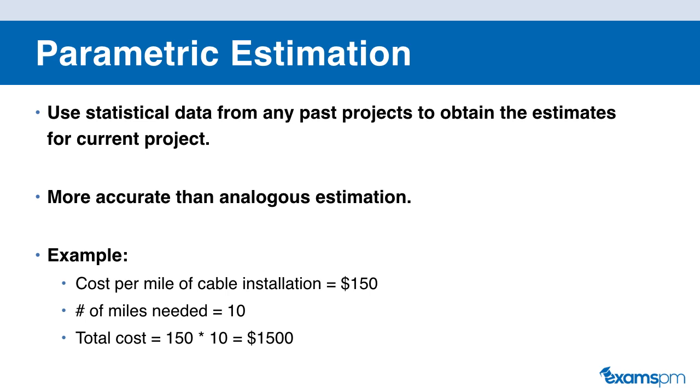So let's take a look at an example here. Let's say that it cost $150 to install one mile of cable and we need 10 miles of cable on our project. So therefore, we would estimate that the cost of installing the cables we need on our project to be 150 times 10, which gives us $1,500.